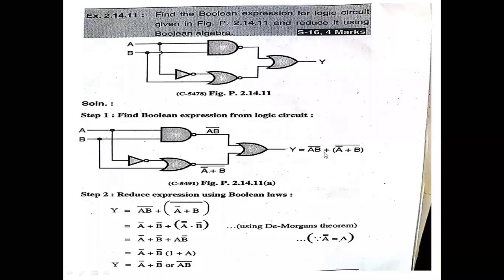Now we have to reduce the expression using Boolean algebra. Y is equal to AB bar plus A bar plus B, with a bar over the NOR output. We will apply De Morgan's theorem to simplify.